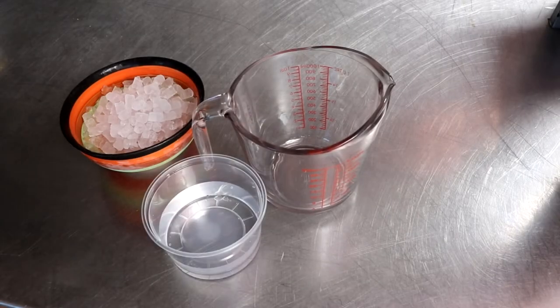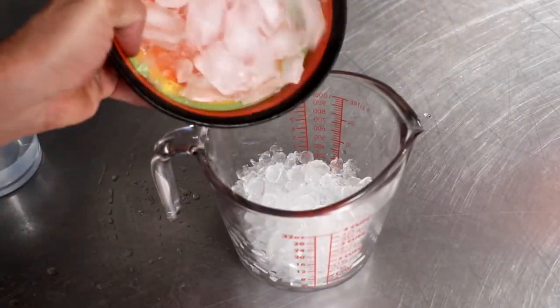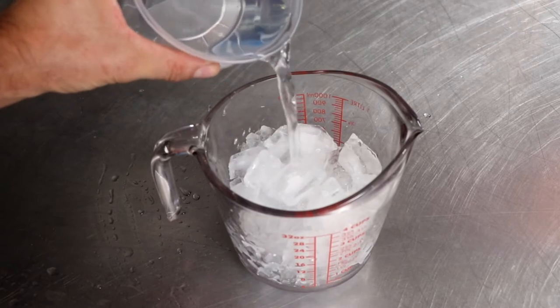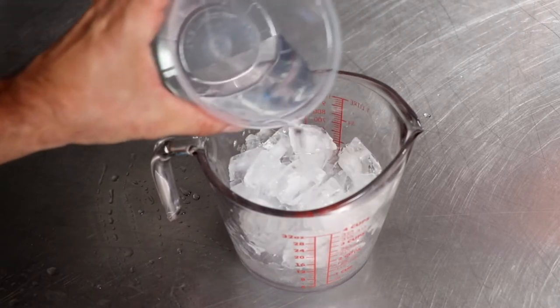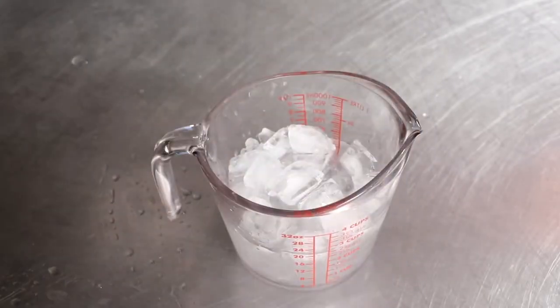To calibrate the temperature controller, what we want to do is we want to make an ice water bath. Basically, 75% ice, 25% water, and then we're going to wait 10 minutes. This should bring the temperature down to 32 degrees.